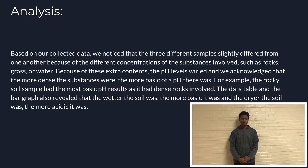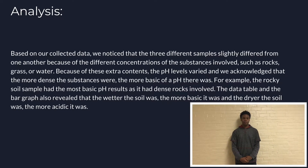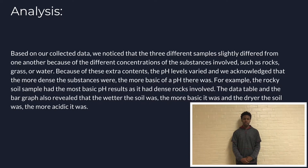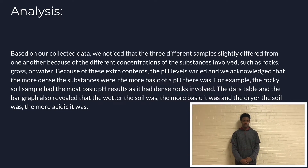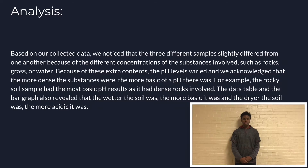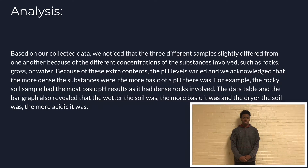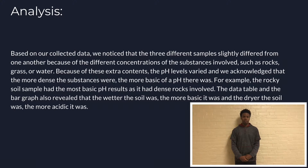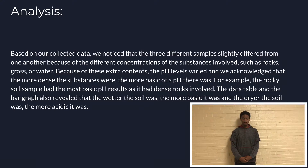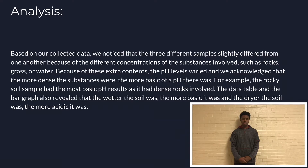Based on our collected data, we noticed that the three samples differ based on different concentrations of substances, such as rocks, grass, or water. Because of this, the pH levels vary, and we noticed that the more substances involved, the more basic the pH. For example, the rocky soil sample had the most basic pH results because of the density of the rocks.